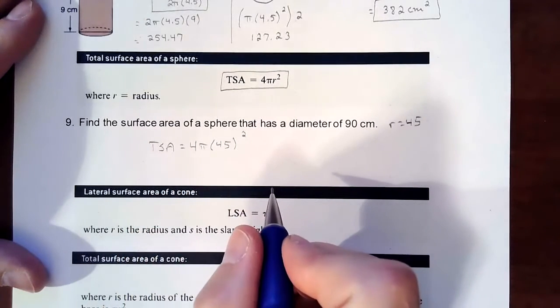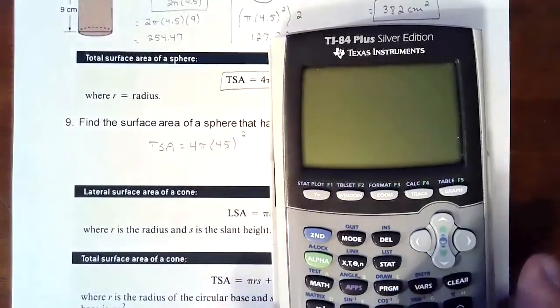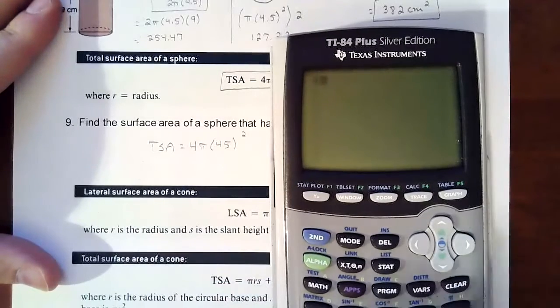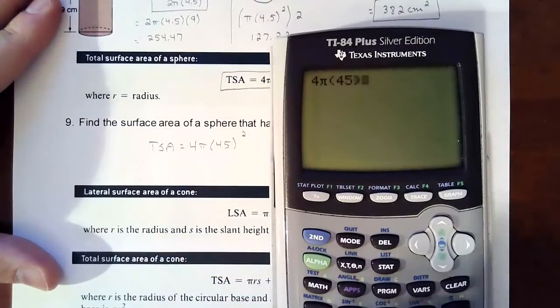So we'll take that and throw it all in the calculator: 4π times 45 squared.